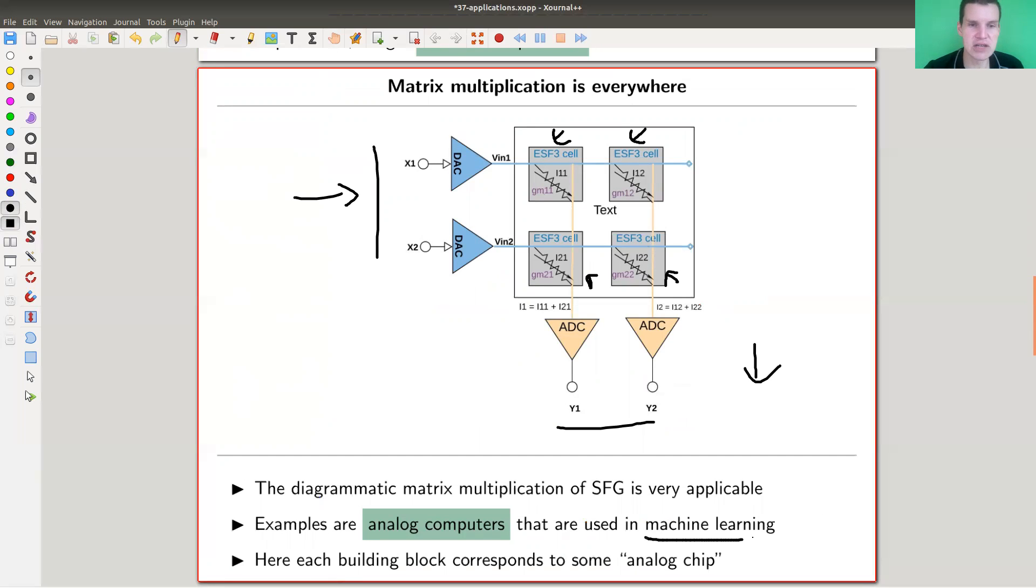This is used in machine learning, where usually huge matrix multiplications must be done, and analog computers can do them much faster than digital computers. The difference between analog computers and digital computers is analog computers are very efficient and very fast for a simple task, for a singular task, while digital computers can do multitasking but they're not really efficient and they're also not very fast. If you just want to do matrix multiplication, this analog computer built on those graphs is actually much more efficient.